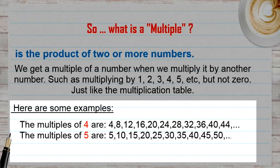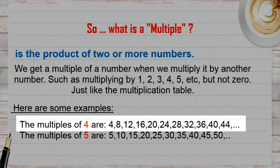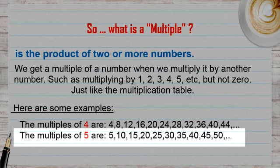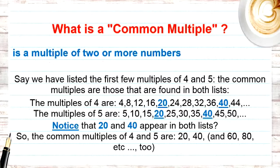Just like the multiplication table. I have two simple examples: the multiples of 4 and the multiples of 5. Multiples of 4 are 4, 8, 12 — just adding 4 each time. 4×1=4, 4×2=8, 4×3=12, and it goes on. Multiples of 5 are 5, 10, 15, 20, 25, and so on.